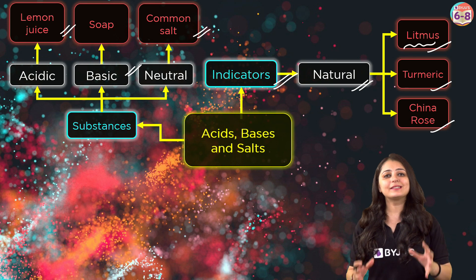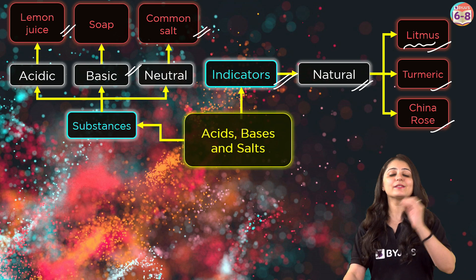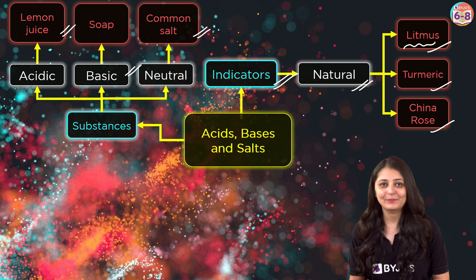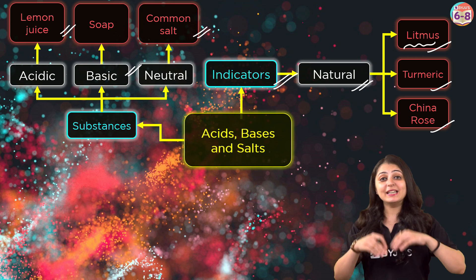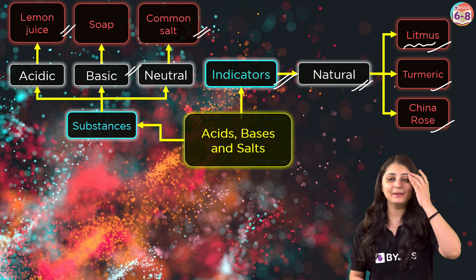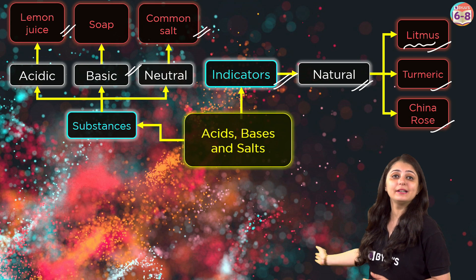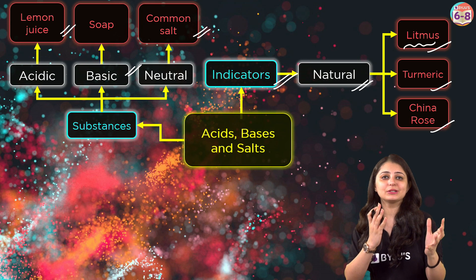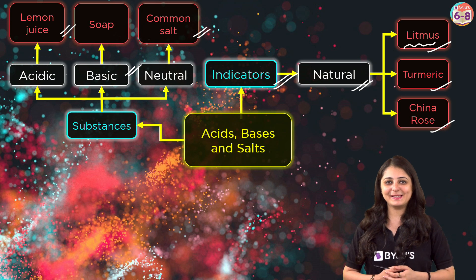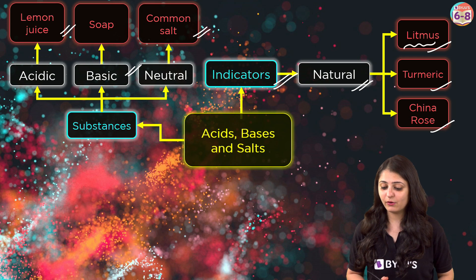Let's start with litmus. Litmus is a natural indicator obtained from lichens. It is available in solution form as well as paper strips. It changes to red color in acidic medium and blue in basic medium. So remember: red in acids, blue in bases.